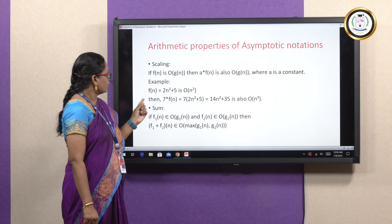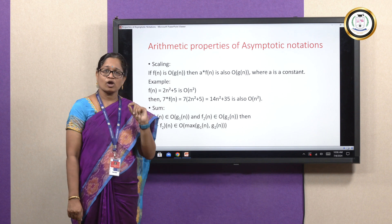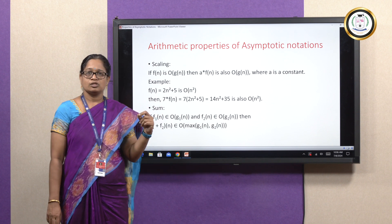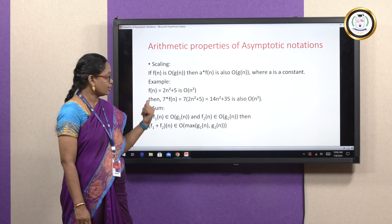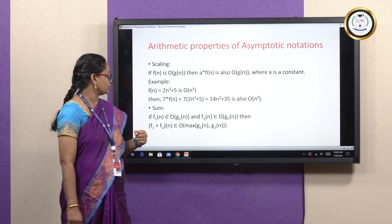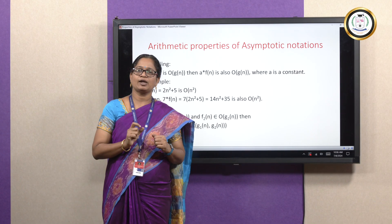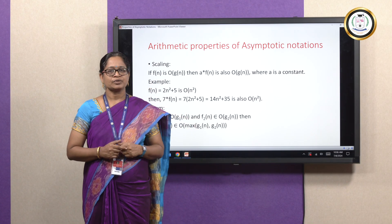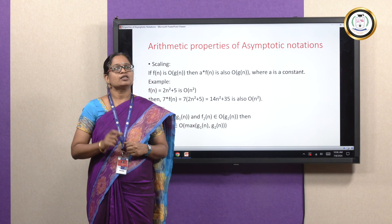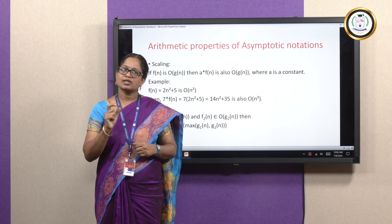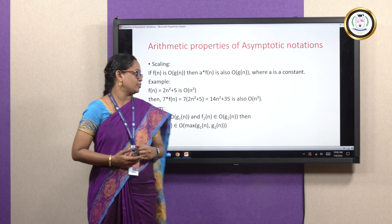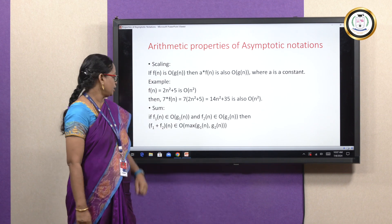If the function f(n) is multiplied by a constant number, say 7, that gives 14n² + 35, which is also a quadratic equation. The order does not change. If a function is multiplied by a constant number, the order or efficiency does not change — it is still the same. That is the scaling property.